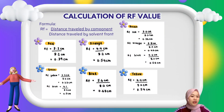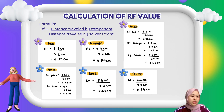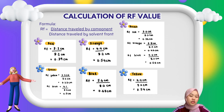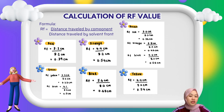Now let's move on to the calculation of RF values. The formula is: RF equals the distance traveled by the color divided by the distance traveled by the solvent front. Red got 0.39, both yellow and orange got 0.54, and blue got 0.68. Green has two spots: yellow got 0.27 and blue got 0.50. Brown has three spots: red got 0.36, orange got 0.46, and blue got 0.56.